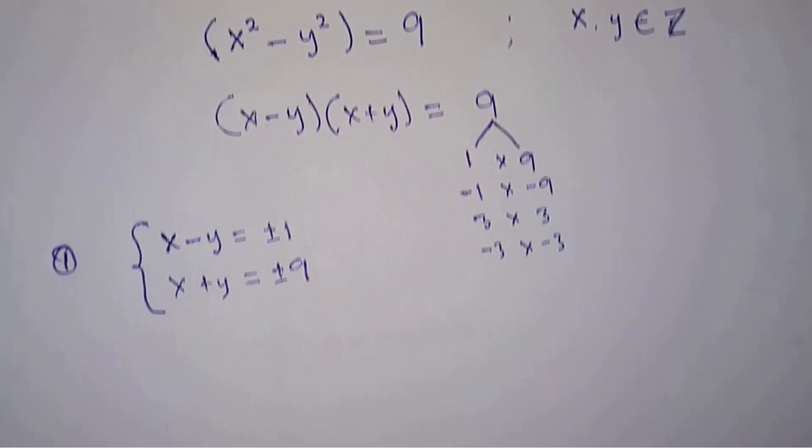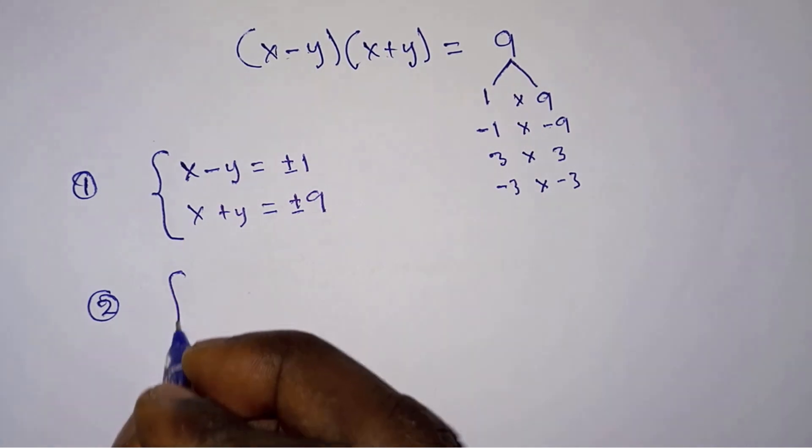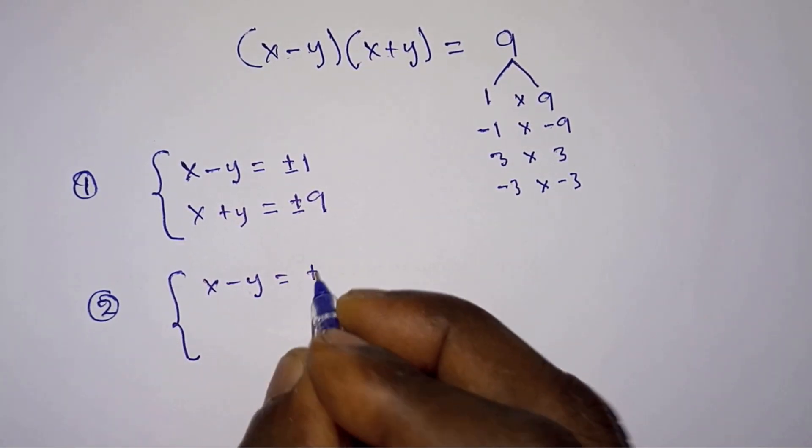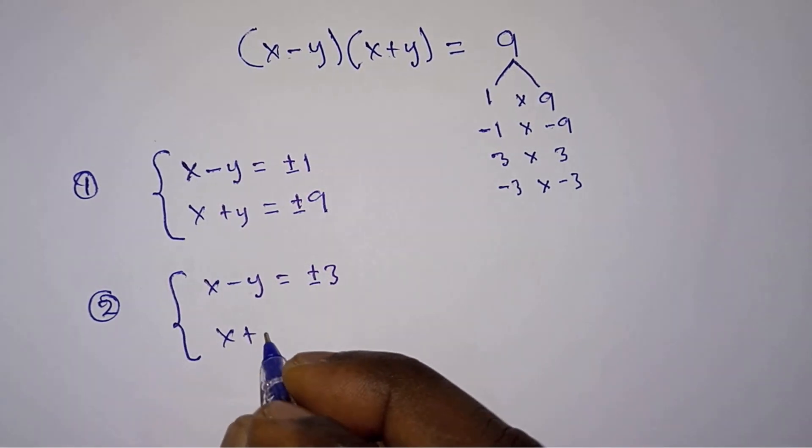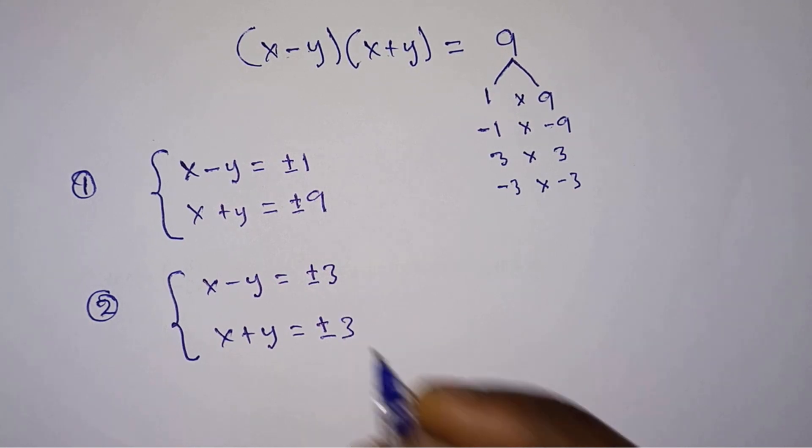Then the second case: we can have x minus y is equal to plus or minus 3, and then x plus y is also plus or minus 3.